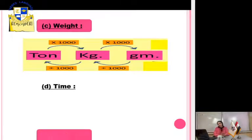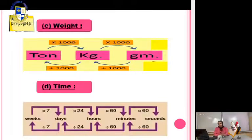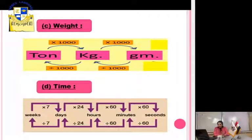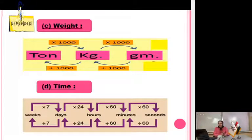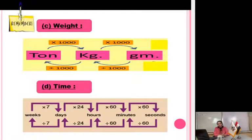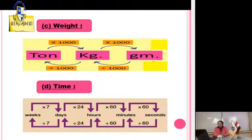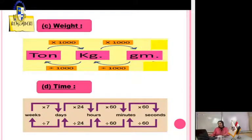Time units: weeks, days, hours, minutes, and seconds. To convert from weeks to days: multiply by 7. From days to hours: multiply by 24. From hours to minutes: multiply by 60. From minutes to seconds: multiply by 60.